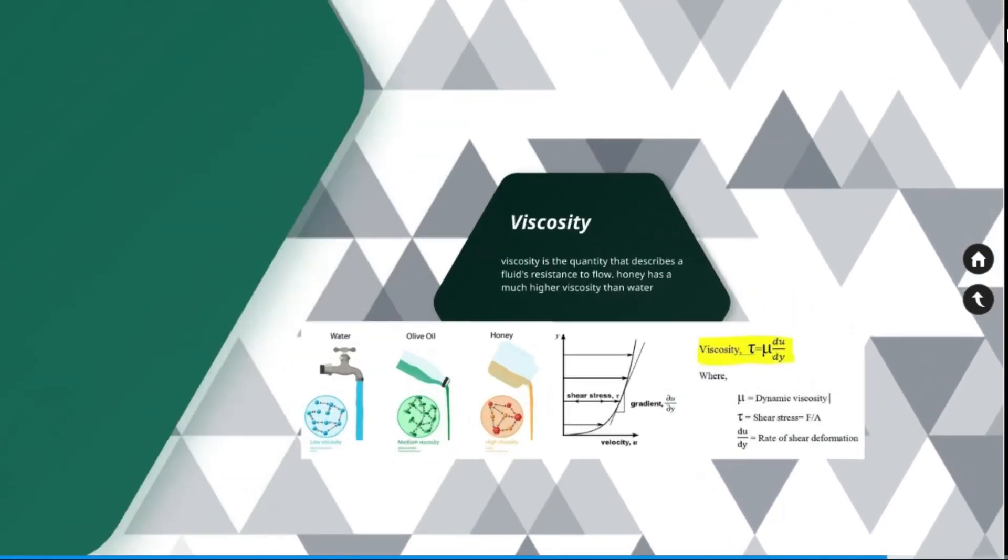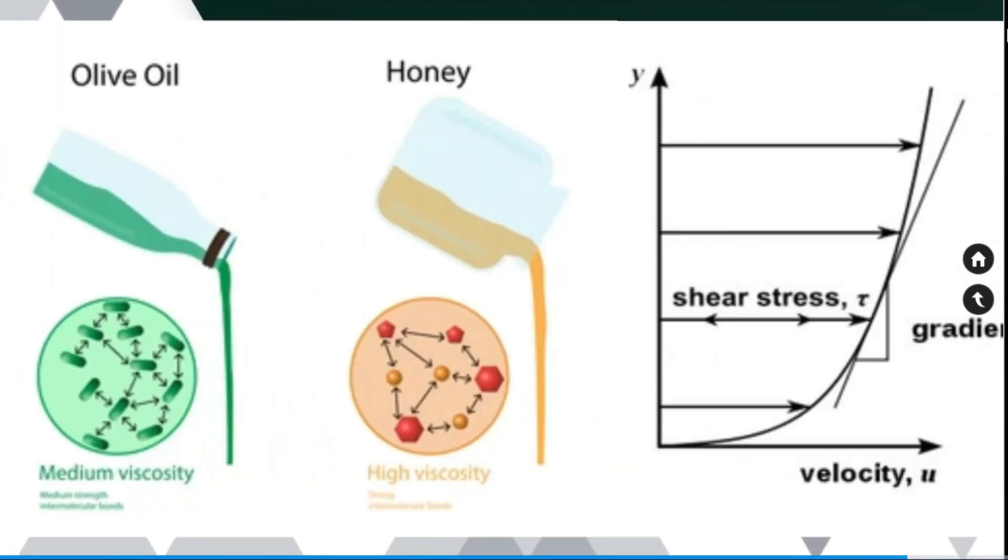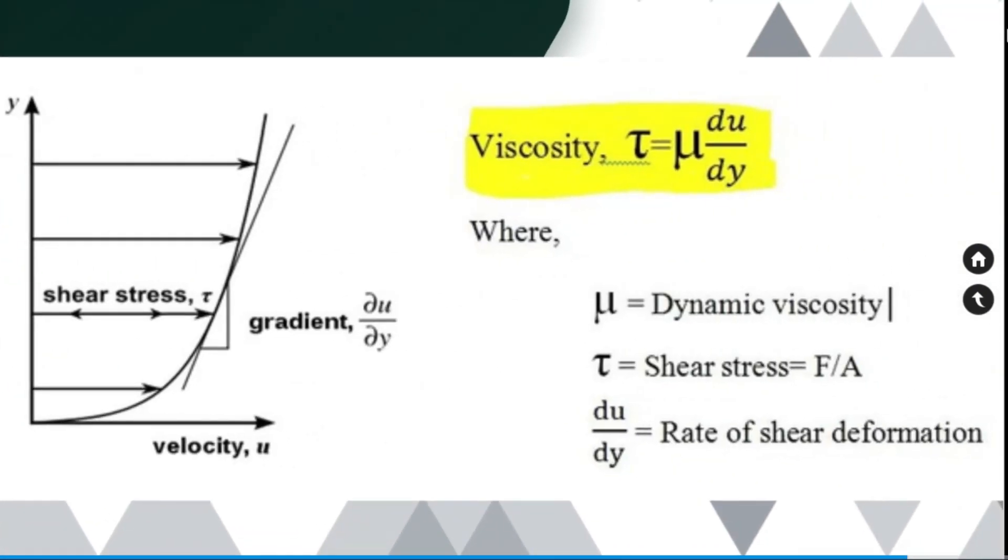Viscosity. Viscosity is the quantity that describes the fluid's resistance to flow. Honey has much higher viscosity than water. When a fluid moves over the solid, the movement is parallel to the surface and this results in a shear force. From that you can derive an equation between the shear force and the viscosity. The shear force is equal to viscosity into rate of shear deformation that is du by dy. u is the velocity and y is the height from the solid surface.